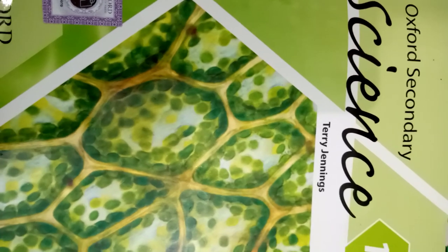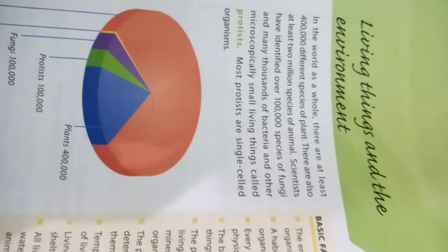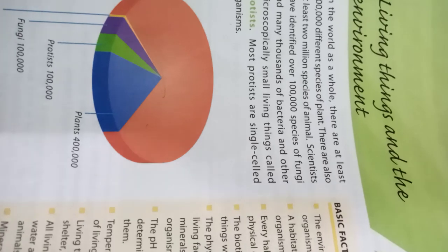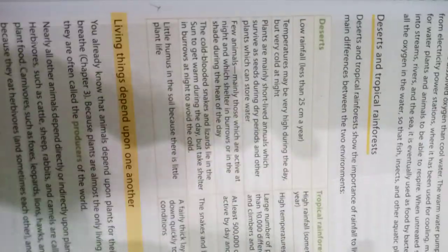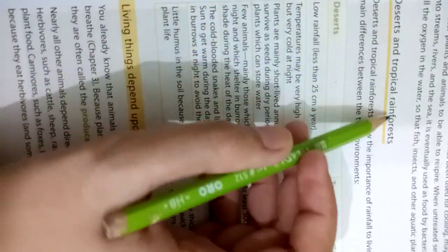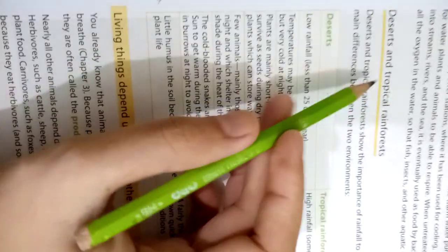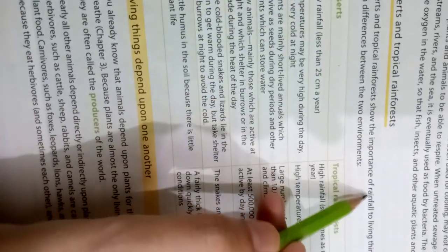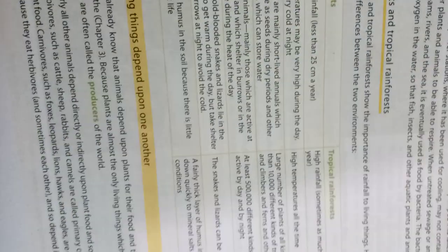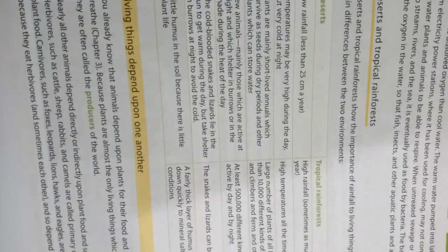Assalamualaikum. Classics Unit number 4: Living Things and the Environment, page number 35. Today we will learn about Desert and Tropical Rainforest, and how they show the importance of rainfall to living things.